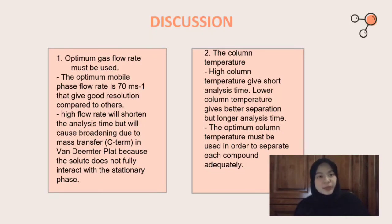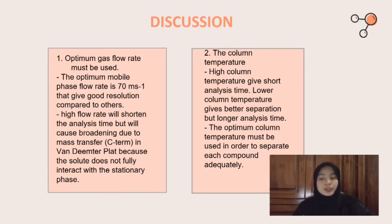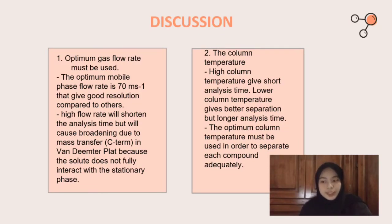My name is Nooraini Binti Mawar Rasul and I will continue with discussion. To reduce analysis time and produce better separation, the optimum gas flow rate must be used. The optimum mobile phase flow rate is 70 cm/s, which gives good resolution. High flow rate will shorten analysis time but will cause peak broadening due to mass transfer effects in the Van Deemter equation, because the solute does not fully interact with the stationary phase. Column temperature also affects the separation resolution and analysis time.